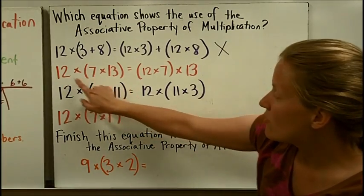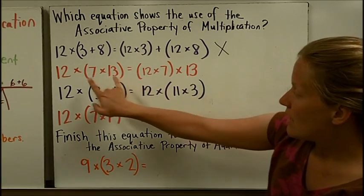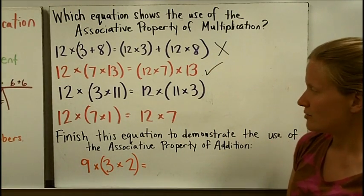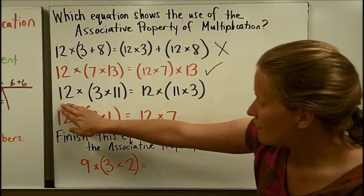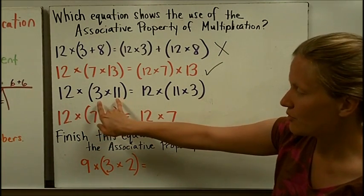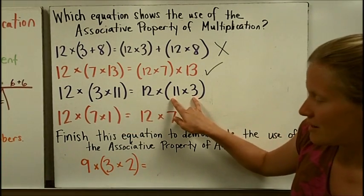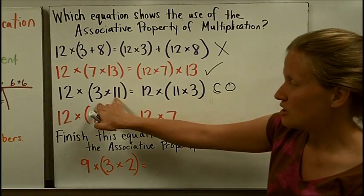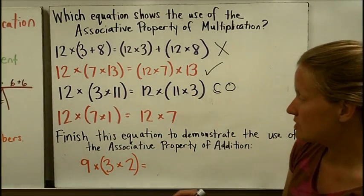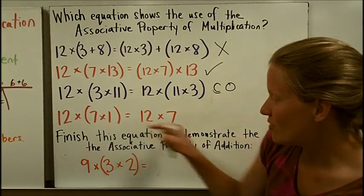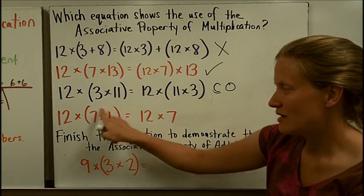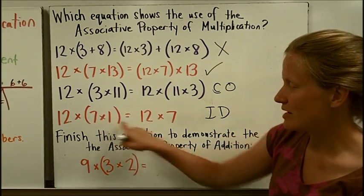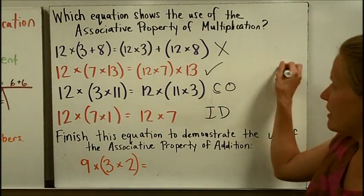The second option has the numbers in the same order — 12, 7, 13 on both sides — with 7 and 13 grouped on one side and 12 and 7 grouped on the other. That looks correct. The third option has the same numbers grouped on both sides — 3 and 11 grouped each time — so it's really just changing the order, making it the commutative property, not associative. The fourth option only has grouping on one side and different numbers on the other, representing the identity property of multiplication, since 7 times 1 equals 7. So the only correct answer was the second one.